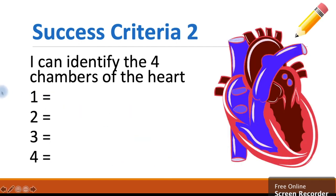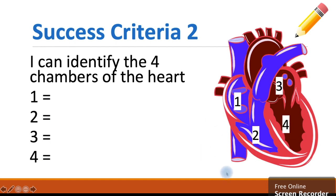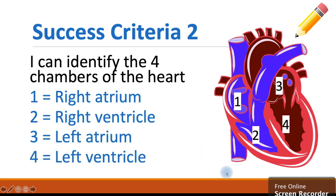Our second success criteria: can you identify the four chambers of the heart? Again, you'll need your pen and paper — write down one, two, three, and four, then write down which is which. Number one is our right atrium. Number two, right ventricle. Number three, left atrium. And number four is the left ventricle. Remember the top tip: left equals right and right equals left.